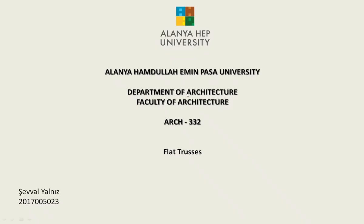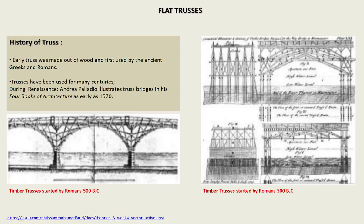My topic is flat trusses. Early trusses were made out of wood and first used by the ancient Greeks and the Romans. Trusses have been used for many centuries. During the Renaissance, Andrea Palladio illustrated truss bridges in his four books of architecture as early as 1570.